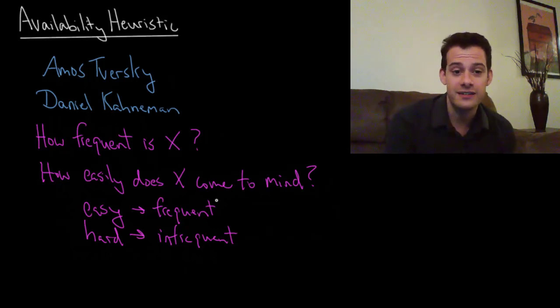So of course this heuristic is used more than just when we're thinking about words and letters. It's really used whenever we have this question about frequency. How frequent is x? That's hard to do. So our mind uses the shortcut and says, well, how easily can I think of examples of it? And then I'll estimate frequency based on that.